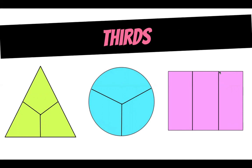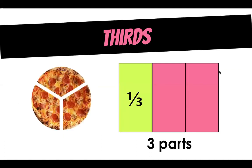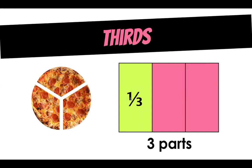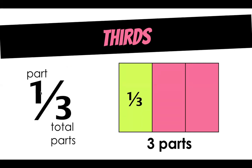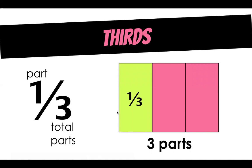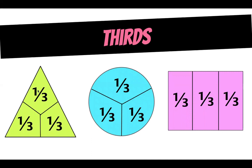Thirds are another fraction. How many pieces are each of these shapes broken into? Three parts. You can see our pizza is broken into three parts — one part of the three total parts, just like our one half. One third, one third, and one third. You can see here we have one of three — one third, one third. And we have a third and a third broken into all of our shapes.